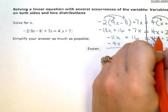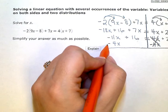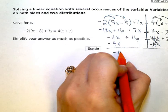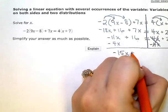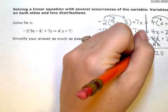So I'll eliminate the variable term on the right, and negative 11x minus another 4x will simplify to negative 15x on the left, plus 16. And on the right I only have 28 now.